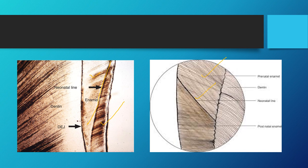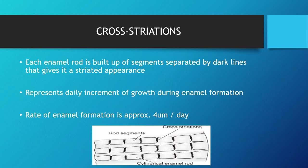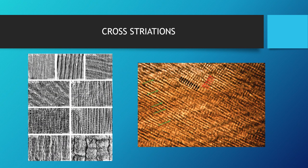Cross striations: each enamel rod is built up of segments separated by dark lines, giving it a striated appearance — these are the cross striations. They represent the daily increment of growth during enamel formation. The rate of enamel formation is approximately 4 micrometers per day. These cross striations can be seen in electron microscopy pictures.